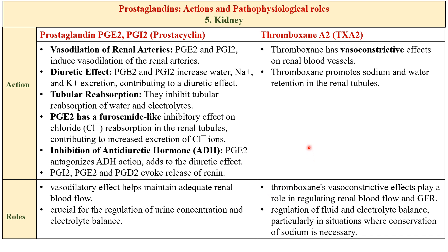Thromboxane A2 can constrict blood vessels including the renal blood vessels. Its vasoconstrictive effect plays a role in regulating renal blood flow, glomerular filtration, and regulation of fluid and electrolyte balance, particularly in situations where conservation of sodium is necessary. The balance between these prostaglandins is important for maintaining proper renal perfusion and function; disruption of this balance can have implications for blood pressure regulation and overall kidney health. For example, patients taking NSAIDs may impair renal function by reducing the vasodilatory effect of PGE2 and PGI2.